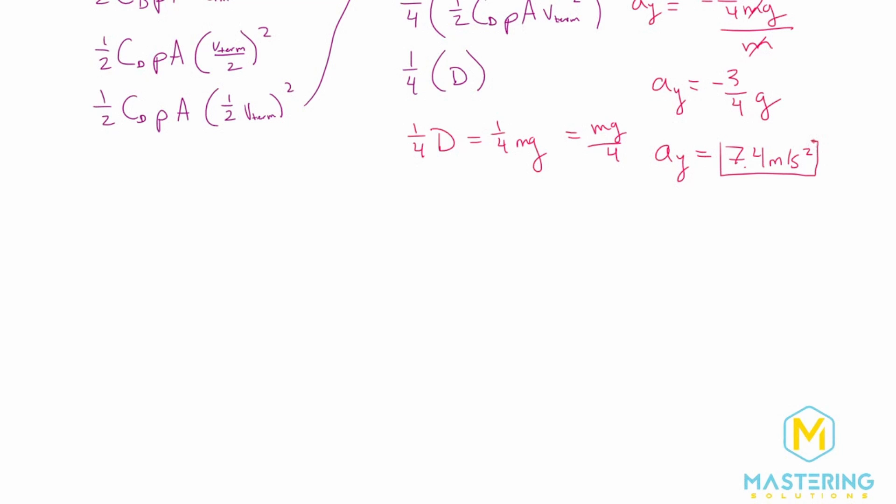And the question asked for the magnitude, so we'll just round that to 7.4 meters per second squared. They don't ask for the direction, so we'll leave it positive. If they asked for the direction and the magnitude, then it would obviously be negative because we're going in the negative y direction. But this is the answer for the question, and at one-half the terminal velocity, the acceleration, the magnitude of it will be 7.4 meters per second squared.